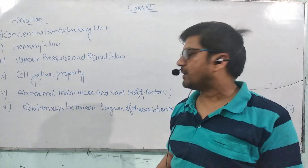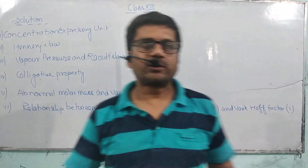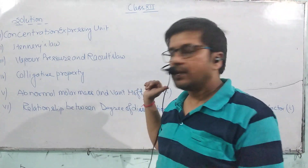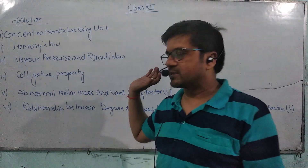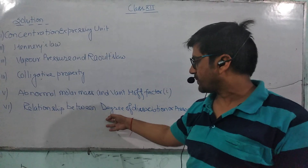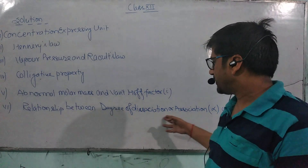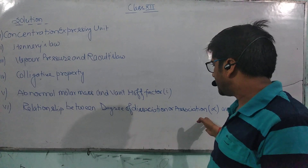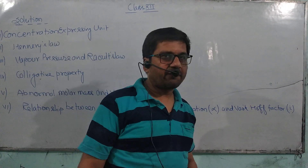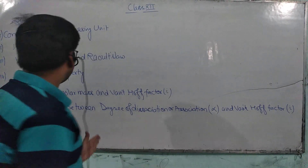The next topic is Abnormal Molar Mass. We will study this topic along with prior data and the Van't Hoff factor. The last topic is the relationship between degree of association or dissociation and the Van't Hoff factor. This whole Solution chapter is divided into these sections.